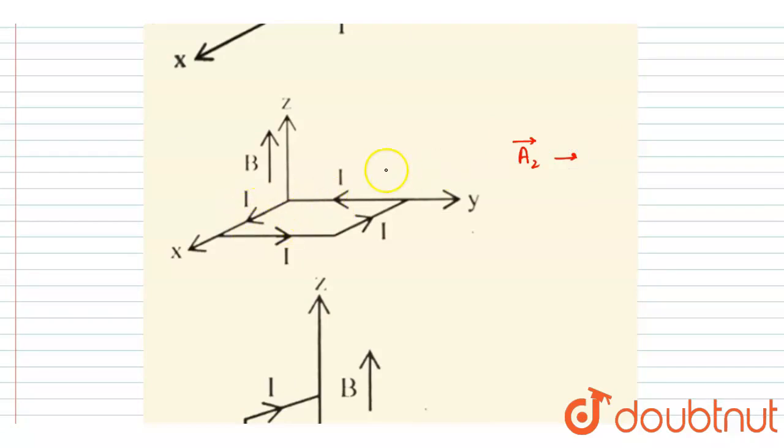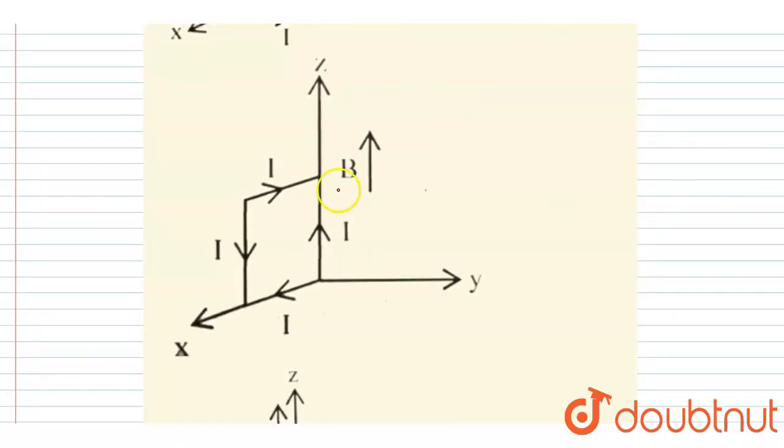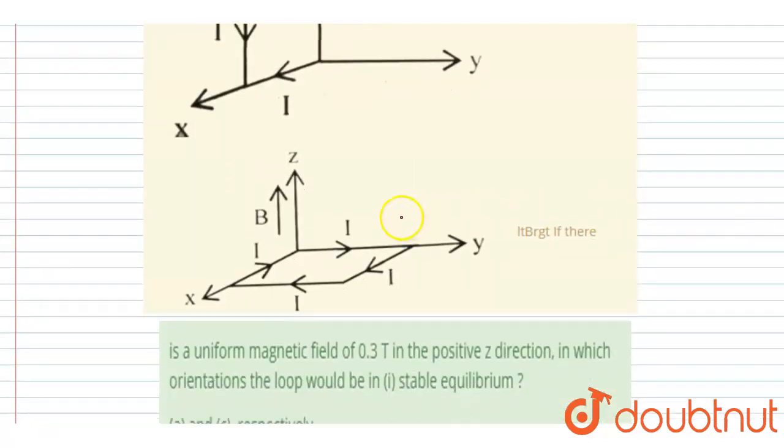If you curl the fingers in the direction of current, it is along the z-axis. If you curl the fingers again in the direction of current, you will get the area vector in the third case, A3, along the y-axis. And if you see the fourth diagram here, if you curl the fingers in the direction of the current, you will get the area vector A4 as negative z-axis.